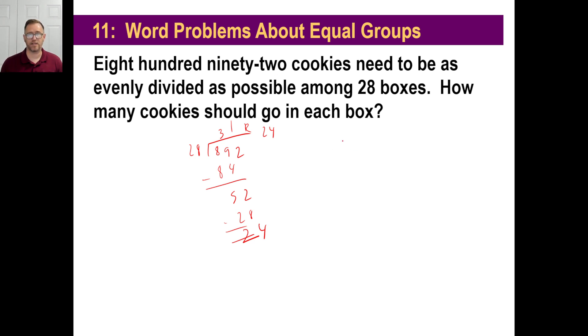Now, the question was, how many cookies should go in each box? We're going to try to make this as evenly distributed as possible. So, we have a remainder. 31 cookies will go in every box, right? But we also have, if you were to put 31 cookies in every box, all 28 boxes, you would look down and go, wait a minute, I still have 24 cookies left. What am I going to do? Well, obviously, you're going to put one cookie in each of 24 of those 28 boxes, right?